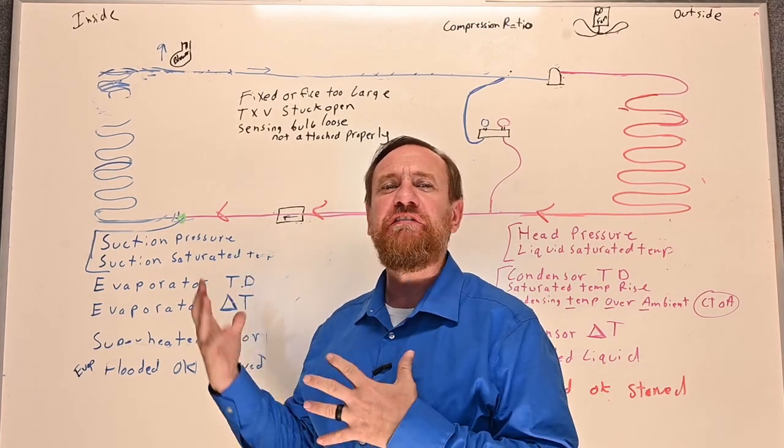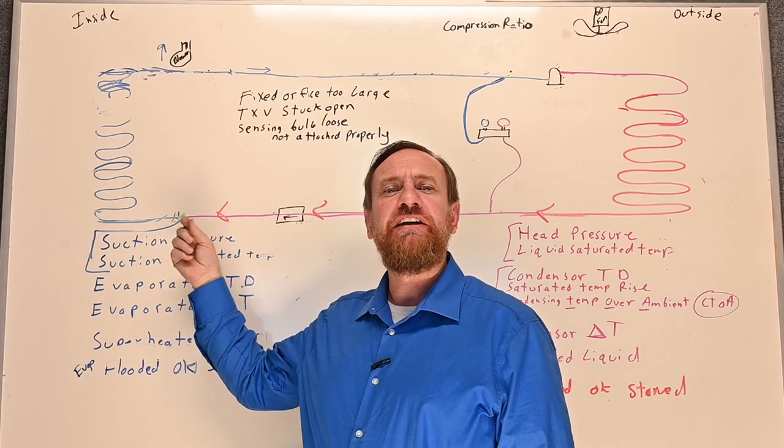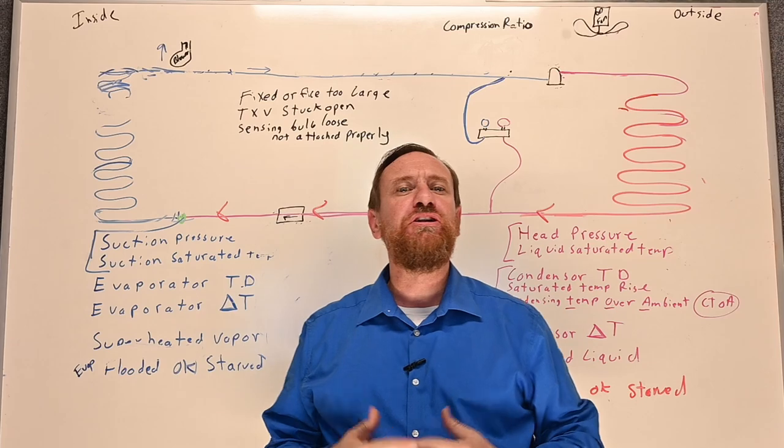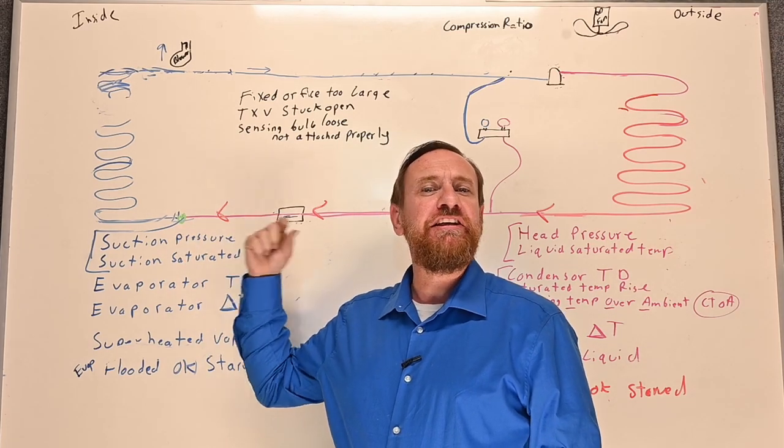Alright, for this one I'm going to categorize several of these together. Let's say that our metering device, our fixed orifice metering device, is too large. Remember, our metering device should match our compressor. A lot of times I'll see people leave the wrong metering device here, and that metering device is too large.